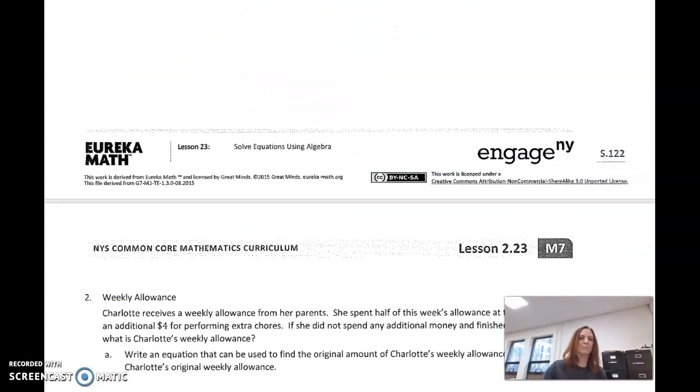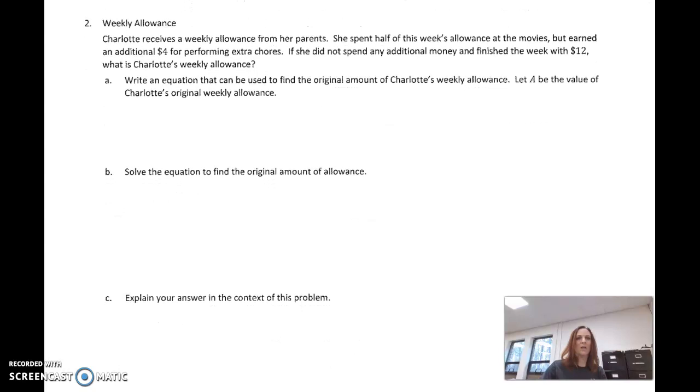So let's do another example. Charlotte receives a weekly allowance from parents. She spent half of the allowance at the movies, but earned an additional $4 for performing extra chores. She didn't spend anything else, and she finished with $12. What is her weekly allowance? Well, again, we have two things going on here. She spent half, and then she received four. So we can take half of her allowance. How do I represent half of her allowance? Well, her allowance is A, so half of that means multiply, so half of A.